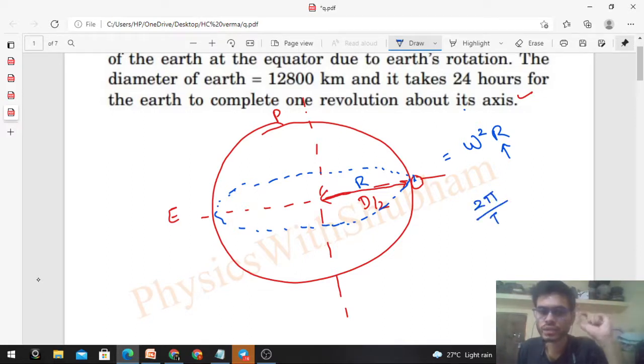So omega - what is it? 2π upon time period, right? Omega is the angular speed. How do we find angular speed? How much angular distance is traveled in one time period, which is 2π. If it completes one circle, the angular distance will be 2π upon time.